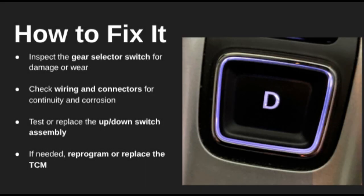Start by inspecting the gear shifter assembly and check the up/down switch for wear or failure. Next, trace the wiring harness between the switch and the TCM, looking for broken wires or corrosion. Replacing the switch is a common fix, and if the issue persists, it could point to a problem with the TCM itself, which might require reprogramming or replacement.